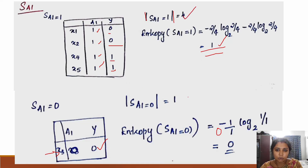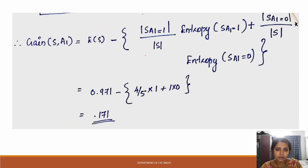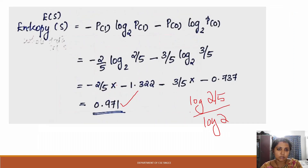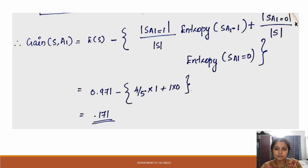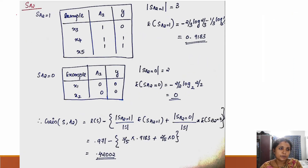A1 equals 1 gives 4 samples out of 8 total. So 4 divided by 5 times the entropy — entropy of the A1=1 subset is 0.171. For the other branch: 3 to the base, and 2 to the base give the entropy value. Minus (1/3) log base 2 of (1/3) gives 0.9183.